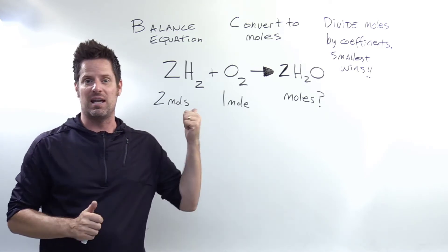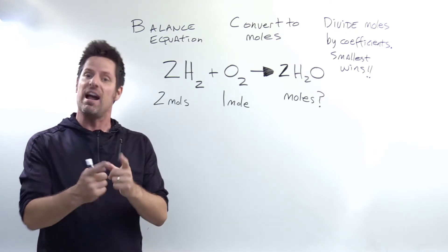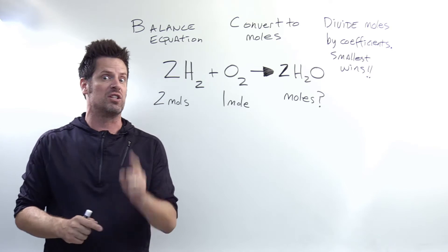The same kind of principle applies to chemical reactions. In order to determine the total amount of product that we're going to make in any scenario, we have to identify which of the reactants is going to run out first. In other words, the limiting reactant.